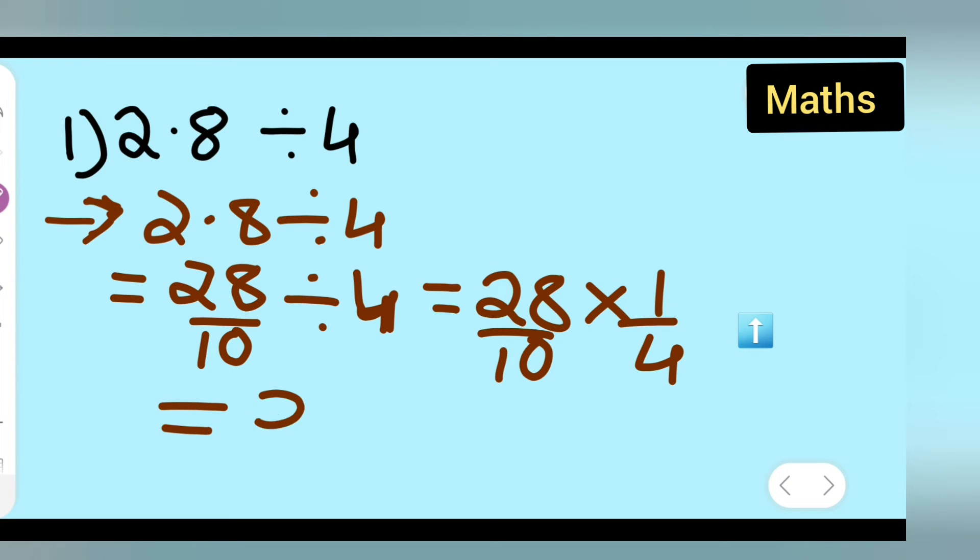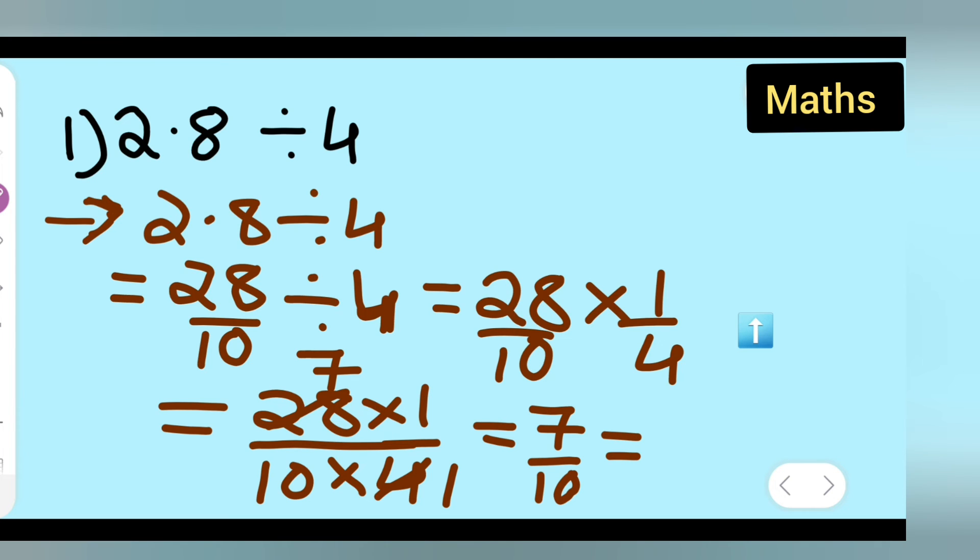Now what answer are you going to get? 28 multiplied by 1 upon 10 multiplied by 4. 4 ones are 4, 4 sevens are 28, so you're going to get 7 upon 10, which is equal to 0.7. That's your answer.